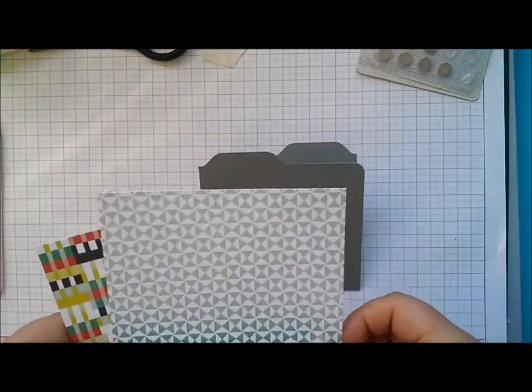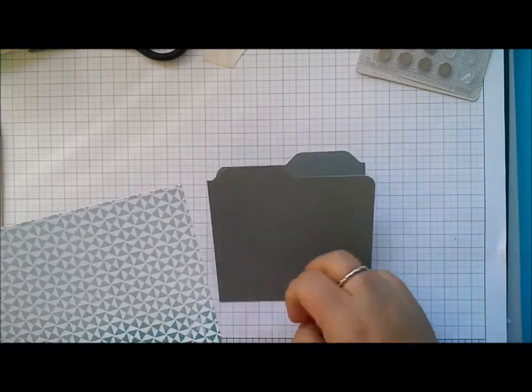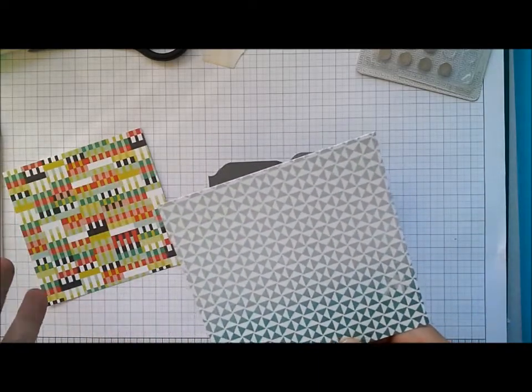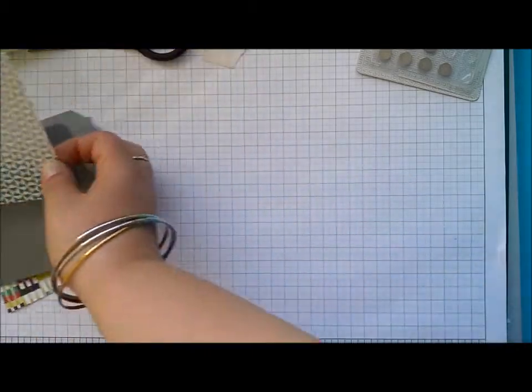Either cut it to the exact same size as your card base, so four and a half, or if you want to just take a little smidge off the bottom something like four and three eighths. And then we're just going to do the same thing.